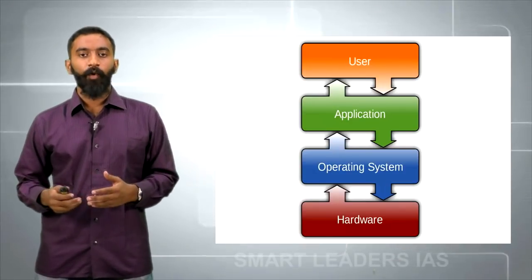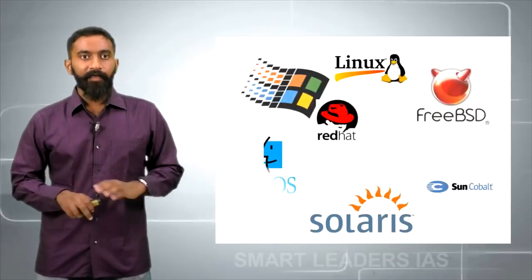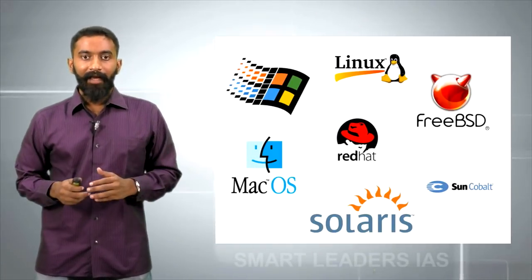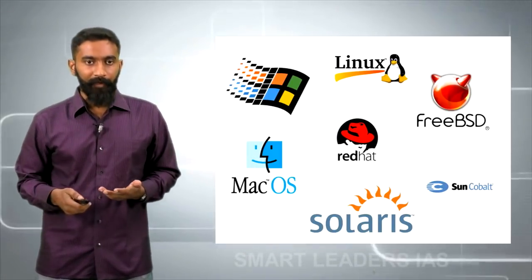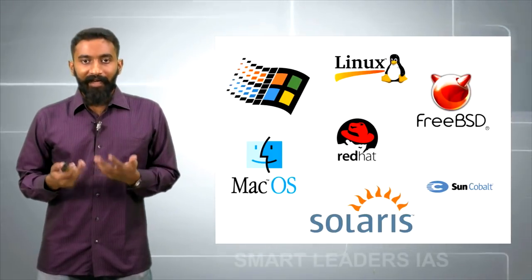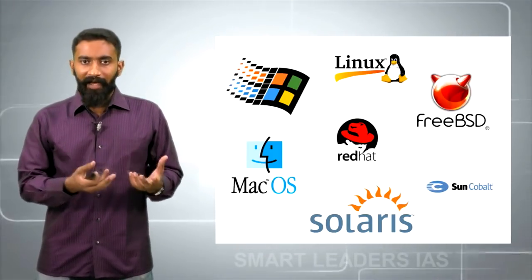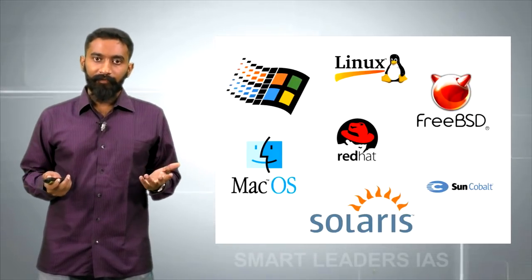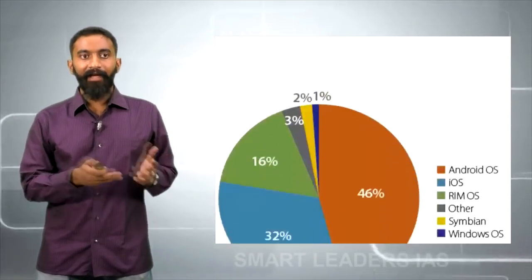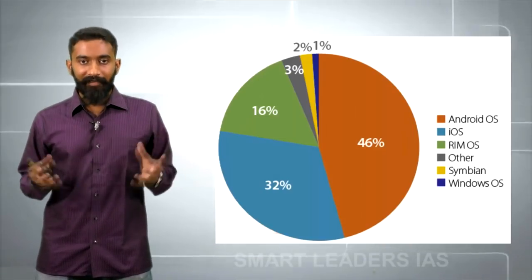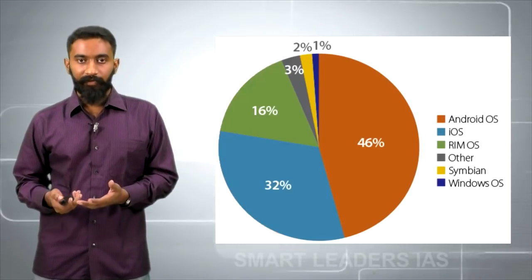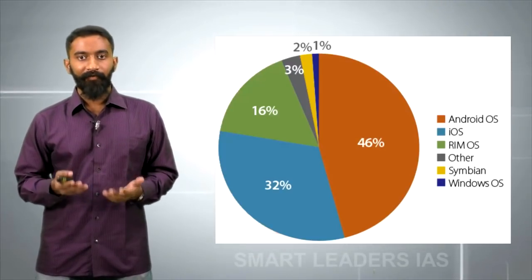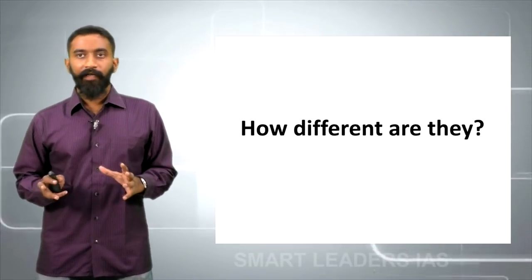Now let us try to understand what other operating systems are there. There are so many operating systems which have come into existence throughout the past two decades, and Android and iOS are just two of them. Why are we looking at only Android and iOS instead of focusing on so many others? Well, because Android and iOS hold the two largest market share in mobile operating systems. So we want to understand more about them and know which is better.